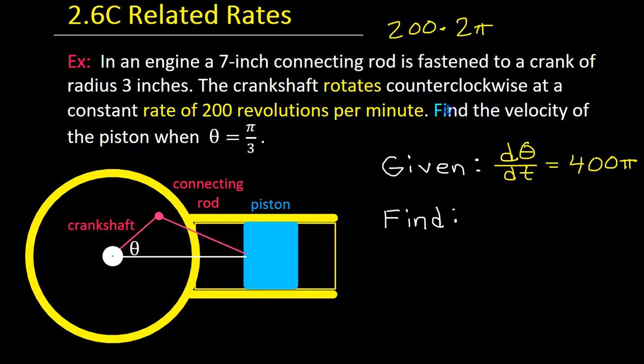We are supposed to find the velocity of the piston. The velocity of the piston is going to be the rate of change of this little horizontal piece right here. So, we better give it a variable. Let's just call it x. As the piston moves, the x value will change. So, they're asking us to find dx dt, the rate of change of x. That will be the velocity of the piston.